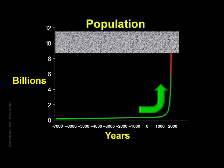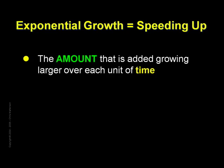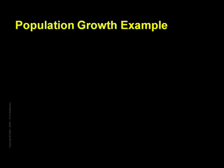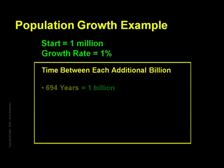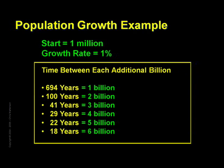The critical takeaway for exponential functions relates to the concept of speeding up. You can think of the key feature of exponential growth either as the amount that is added growing larger over each additional unit of time, or as the time shrinking between each additional unit of amount added. To illustrate this using population: starting with 1 million people at 1% growth per year, it would take 694 years to reach a billion people. But we'd be at 2 billion after only 100 more years, a third billion in just 41 more years, then 29 years, then 22, then only 18 years to reach 6 billion. Each additional billion people took a shorter and shorter amount of time — the theme of speeding up.